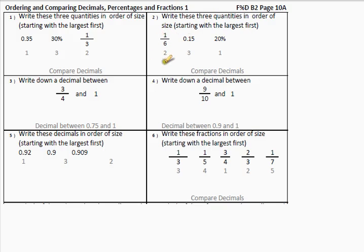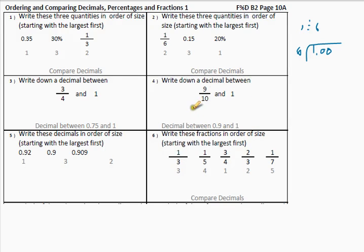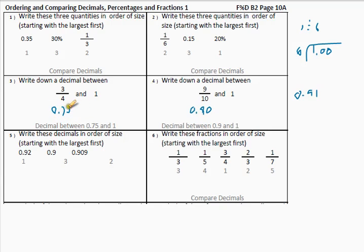Let's just quickly see — did you know how to work out 1 sixth? You could have said 1 divided by 6 and followed that method. Those ones you should have known. Write down a decimal between — that one is 0.9, in other words 0.90. So it can be anything between that: 0.91, 0.92, 0.95 and so on — there's a lot of numbers there. This one is 0.75 — in other words it can be 0.76, 0.8, 0.9, anything there.